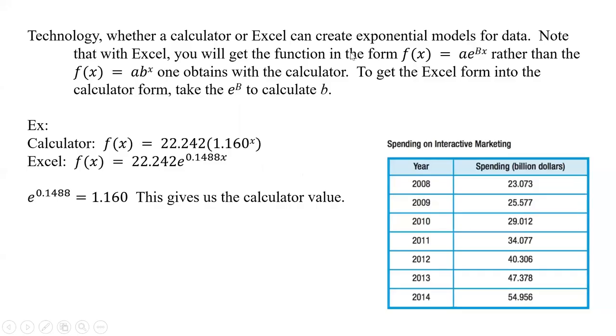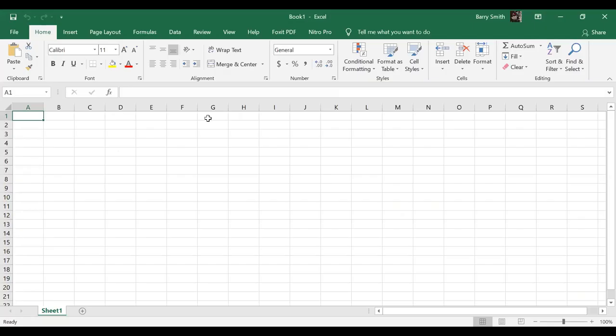Okay, now let's do that again with Excel. And so this time what's going to happen is we'll get a different kind of a regression analysis. So we'll have zero, one, two, three, four, five, six. And then we have 23,073 and 25,057 and 29,012 and 34,077 and 43,06 and 47,378 and 54,956. All right, so we've got our data typed in now.